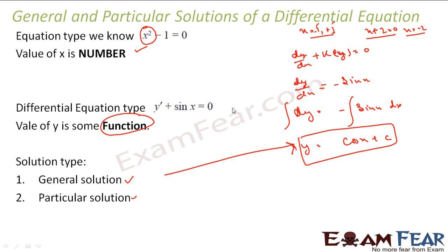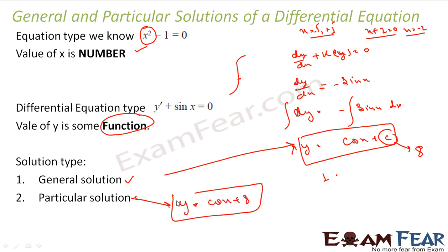But if I put a known value — for example, if y = 0 when x = π/2 — I can find c. Suppose c comes out to be 8; then I write my solution as y = cos x + 8. In this case I have a particular solution — only one specific solution. When c can be any value you have multiple solutions, which is the general solution; when c has an actual known value, that one solution is a particular solution.